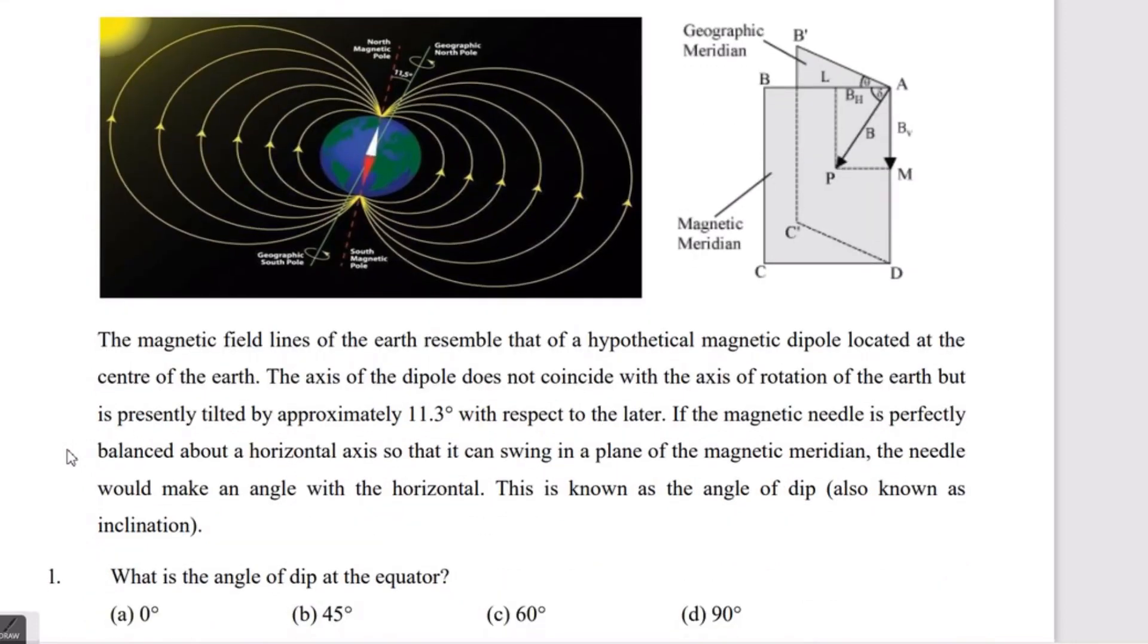Let's discuss the content given in the question. The magnetic field lines of Earth resemble that of a hypothetical magnetic dipole located at the center of the Earth. The axis of the dipole does not coincide with the axis of rotation of the Earth but is tilted by approximately 11.3 degrees with respect to the latter.